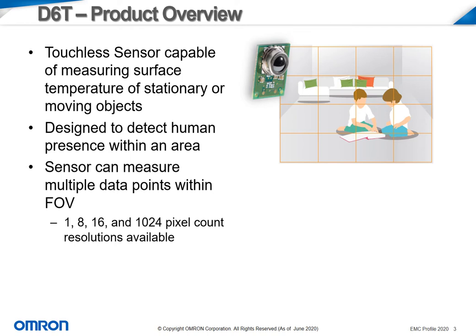Currently, OMRON has available 1, 8, 16, and 1024 pixel count resolutions. The sensor gathers raw data which can be transmitted to the attached MCU via a digital I2C output.